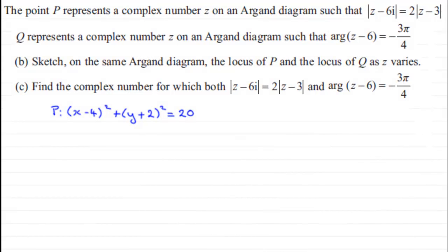Hi. Now in a previous video, we were told that the point P represents a complex number z on an Argand diagram, such that it was given by this equation here, and we had to describe the locus of it. We found that this equation, its Cartesian form was this, which represented a circle with a center at x equals 4, y equals minus 2, and a radius equal to the square root of 20.